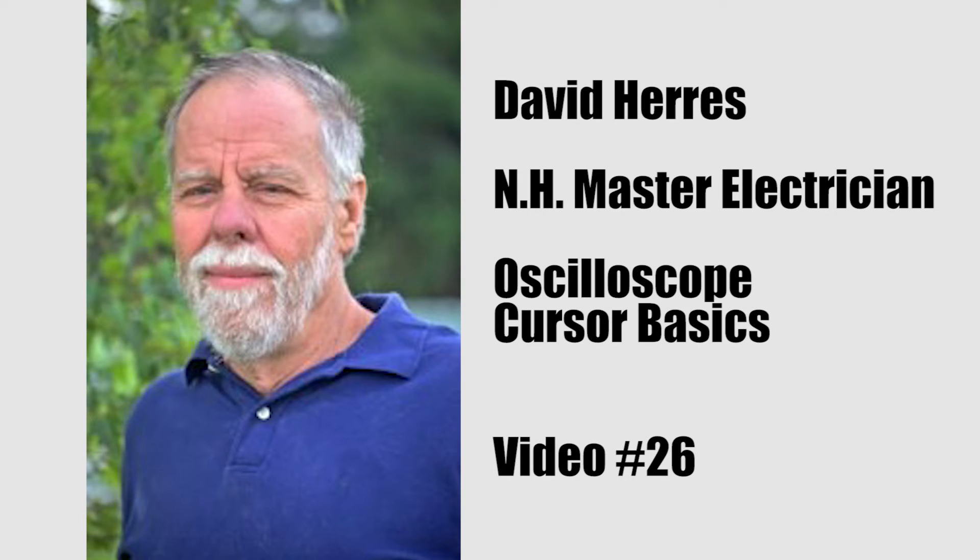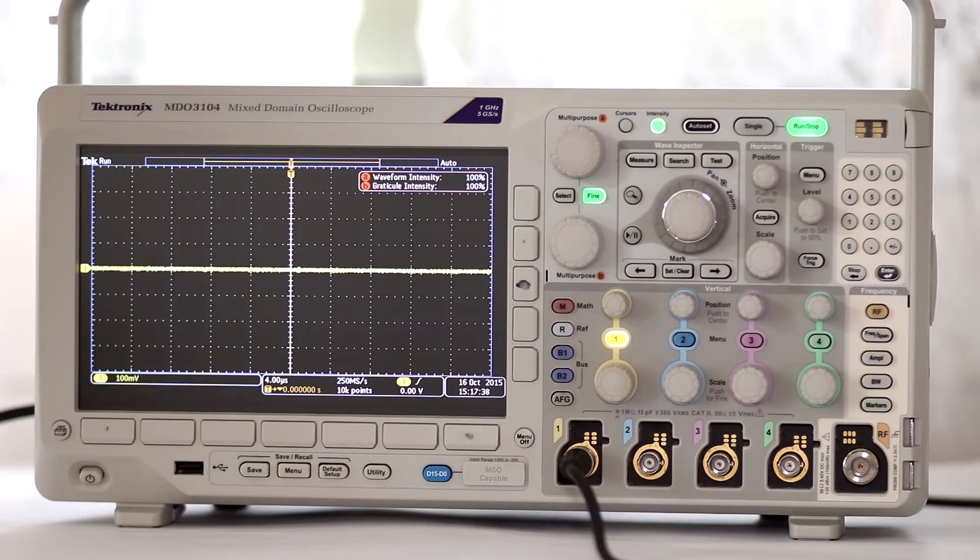Hi and welcome to Test and Measurement Video 26. Today we're going to return to the amazing Tektronix MDO 3104 oscilloscope. We'll see how this instrument uses cursors to bracket specific portions of a waveform so that information can be gained about the enclosed segment.